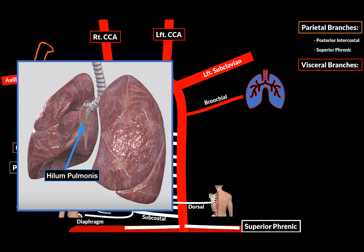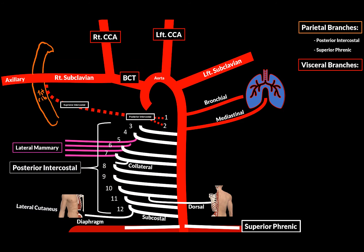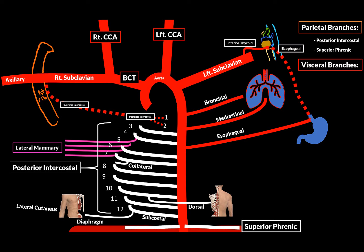The bronchial branches supply the lungs, the bronchi, and the visceral pleura with blood. Then there are the mediastinal branches, which are many branches that supply many structures in the posterior mediastinum, like the lymph nodes, fibers, and fatty tissue. Then there's the esophageal branch, supplying the esophagus. The upper part communicates with the esophageal branch of the inferior thyroid artery, which comes from the thyrocervical trunk of the subclavian artery. It also communicates with the left gastric artery at the lower part — the abdominal part of the esophagus.